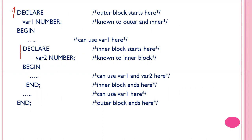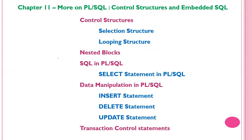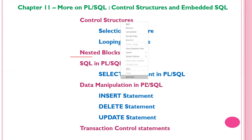This is the outer block and this is the inner block. Variable 1 declared in the outer block can be used in the inner block. Variable 2 declared in the inner block is only accessible within the inner block. I hope you understand what we have seen about the looping structure and nested blocks. These are our control structures. In the next class, we will see about SQL and PL/SQL. Thank you.